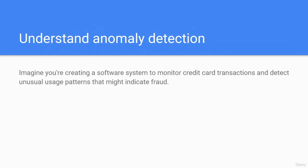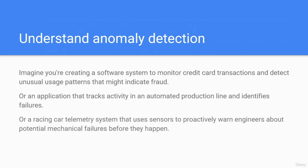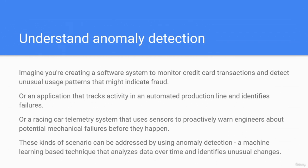Imagine you are creating a software system to monitor credit card transactions and detect any unusual usage patterns that might indicate fraud, or an application that tracks activities in an automated production line and identifies failures, or a racing car telemetry system that uses sensors to proactively warn engineers about potential mechanical failures before they happen. These kinds of scenarios can be addressed by using anomaly detection.